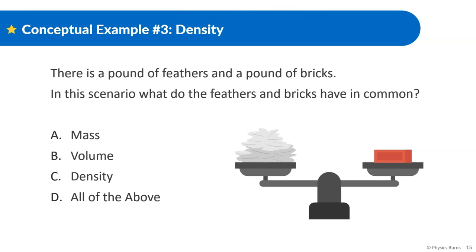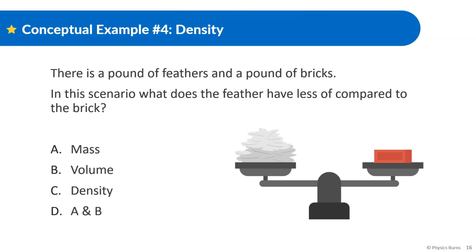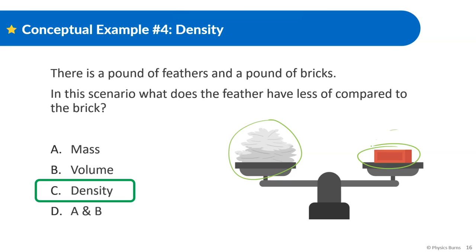There's a classic joke that helps with understanding density: a pound of feathers and a pound of bricks — what do they have in common? The answer is mass. A pound of feathers and a pound of bricks have the same amount of weight or mass. Now: a pound of feathers and a pound of bricks — what does the feather have less of compared to the brick? The answer is density — option C. Even though there are a lot more feathers and the shape is bigger than the bricks, it's a lot less dense. Even though they have the same mass or weight, the feathers are a lot less dense.